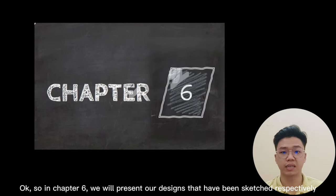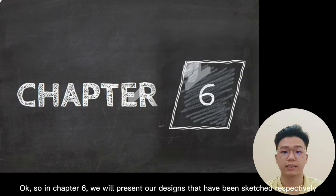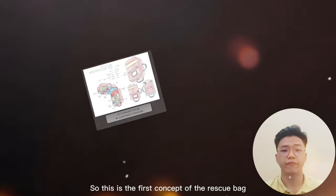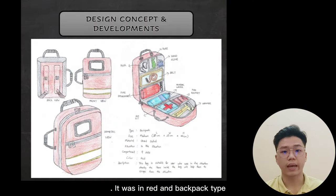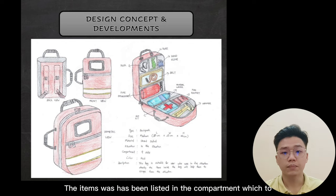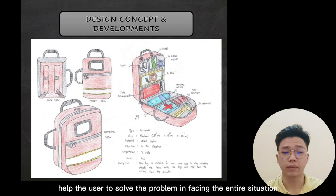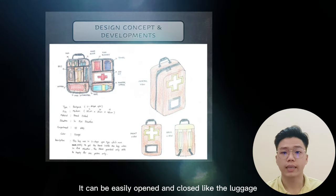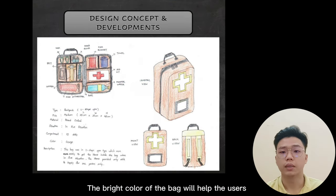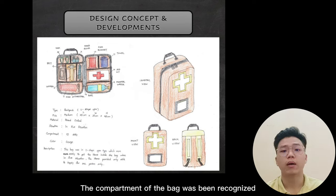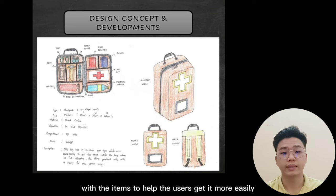In chapter 6, we will present our design sketches. All sketches were made according to the design criteria and direction. The first concept is a red backpack type with a dual handle added for comfort in any condition. Items are listed in compartments to help the user address emergency situations. The second concept is also a backpack type but opens differently — it can be opened and closed easily like luggage. The bright color helps users locate it in a smoke-filled environment, and compartments are labeled to help users access items quickly.